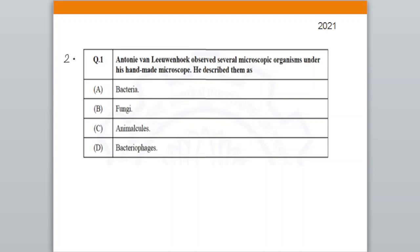Question number two — asked in 2021: Anthony von Leeuwenhoek observed several microscopic organisms under his handmade microscope. He described them as: A. bacteria, B. fungi, C. animalcules, D. bacteriophages. Correct answer is option C, animalcules.